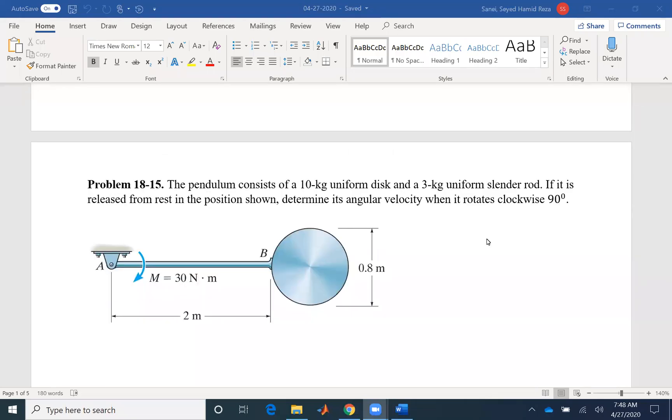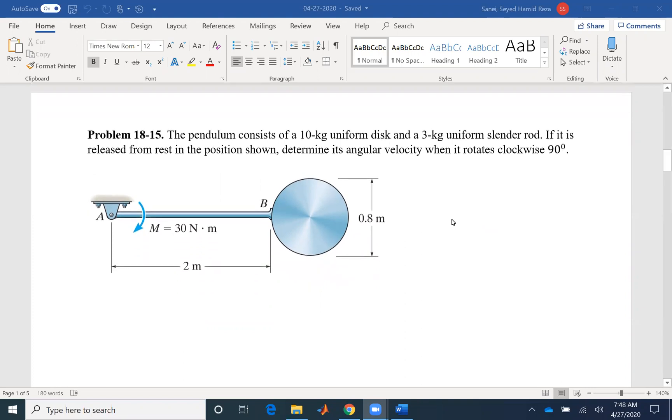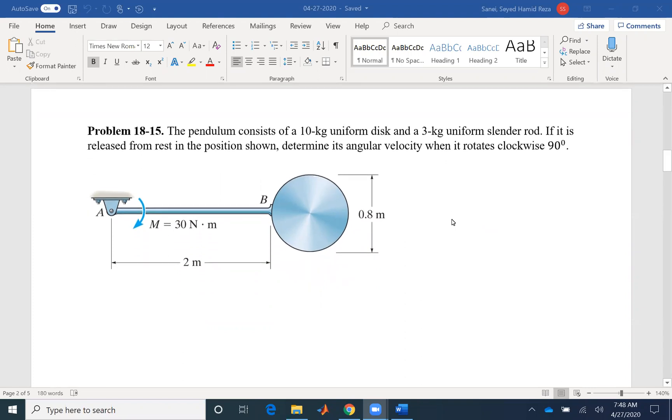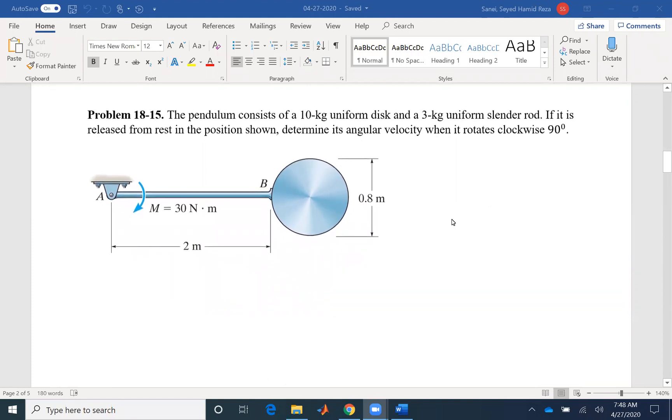Hello everyone. We are going to solve problem 15 of chapter 18. The pendulum consists of a 10 kilogram uniform disc and a 3 kilogram uniform slender rod. If it is released from rest in the position shown, determine its angular velocity when it rotates clockwise 90 degrees.